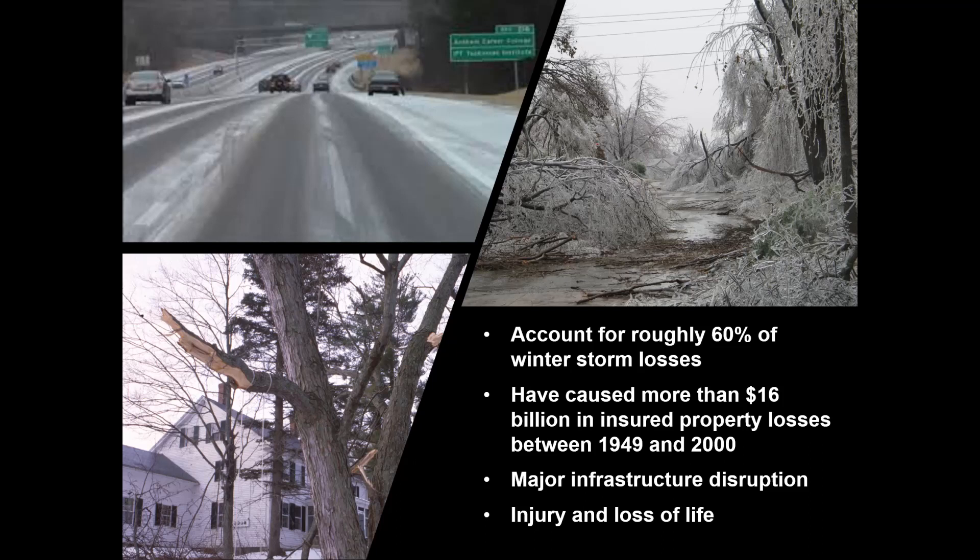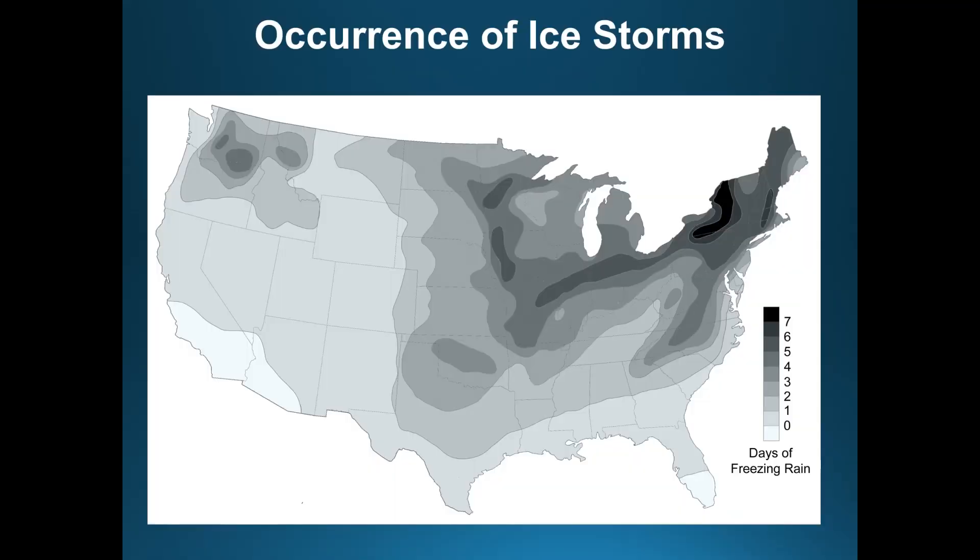Ice storms result in major infrastructure disruption — roads, schools, and businesses all have to close during major ice storms. And unfortunately, they do result in injury and loss of life.